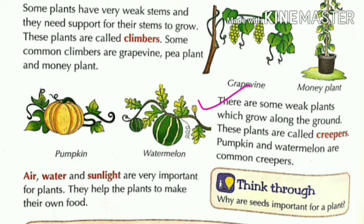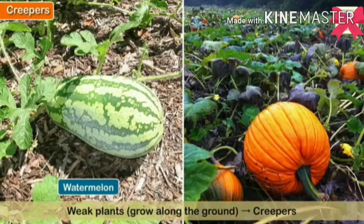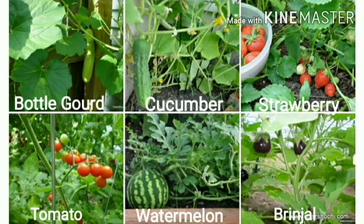Now let's read the last type of plant: creepers. There are some weak plants which grow along the ground. These plants are called creepers. Pumpkin and watermelon are common creepers. As you can see, they all grow along the ground and they have weak stems. That's why they are called creepers. Some more examples are bottle gourd, cucumber, strawberry, tomato, watermelon, and brinjal.